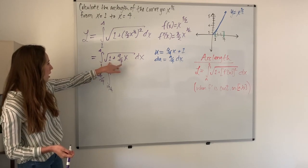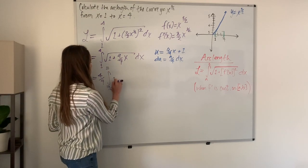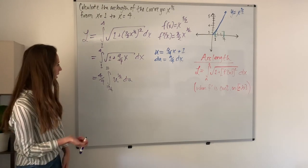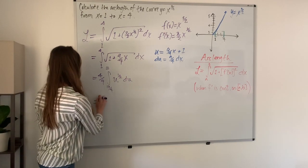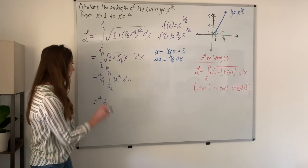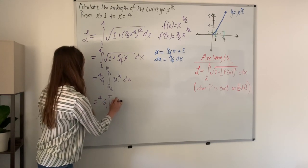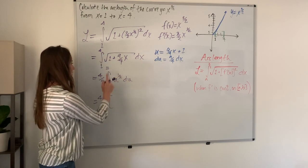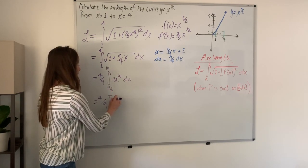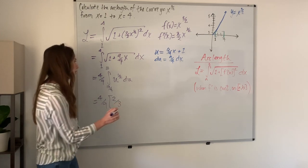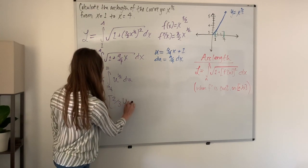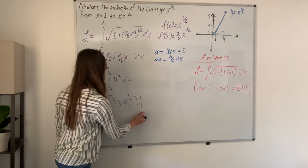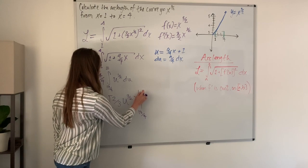Since this is our u, we just have u to the 1 half du. Now we can integrate this and we get 4 ninths times 2 thirds u to the 3 halves power evaluated from 13 over 4 to 10.